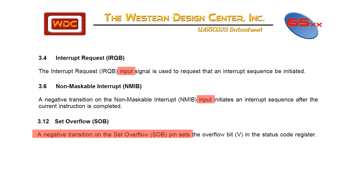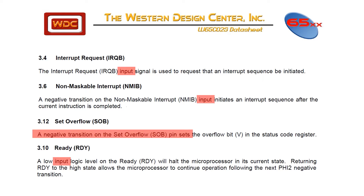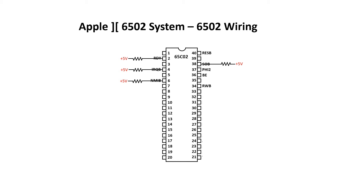Set overflow: a negative transition on the set overflow pin sets the overflow bit in the status code register. I'm not really sure why you would want to use the set overflow signal, maybe as an additional input, but for now let's just tie it high. Remember that I use the terms high, 5 volts, and logical 1 interchangeably. Ready: a low input logic level on ready will halt the microprocessor in its current state. Returning ready to the high state allows the microprocessor to continue operation following the next phase 2 negative transition. The ready signal is a bit more complicated, and we'll want to use it later to slow the CPU to talk to the Arduino. So we'll just tie it to 5 volts for now, but we'll need to come back to this one. These little squiggly lines are resistors — they're used for electrical purposes, but the signal at the pin is still 5 volts. The reason we do this is that connecting inputs like these directly to 5 volts can damage some chips.